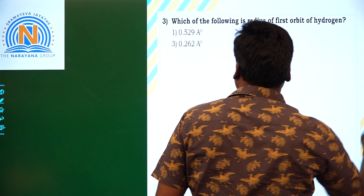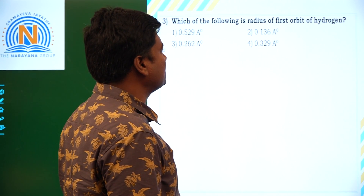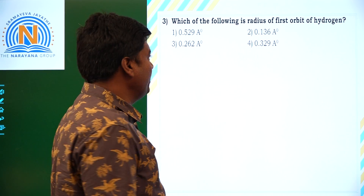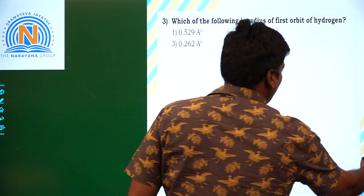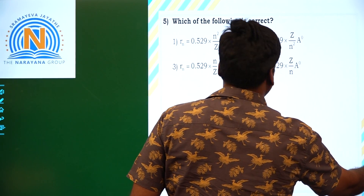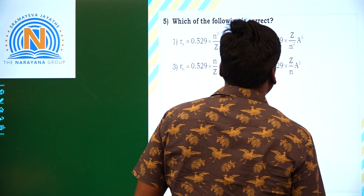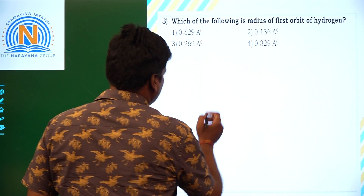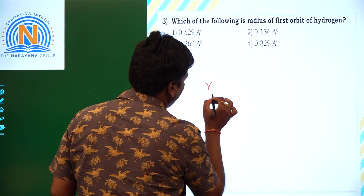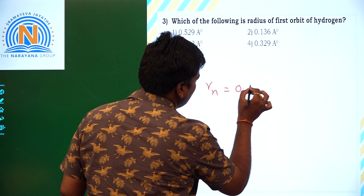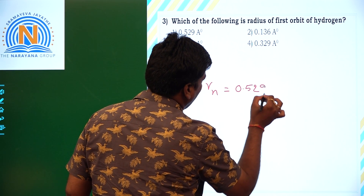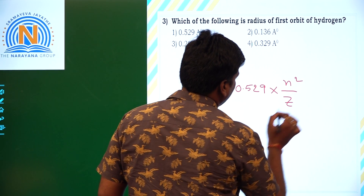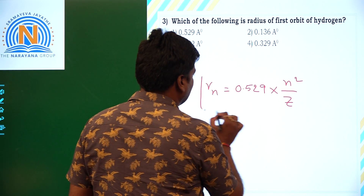Now the next question: which are the formulas for the radius of the first orbit of hydrogen atom? The options are given in angstrom units. For the nth orbit, I can take r_n equal to 0.529 into n square by z, to calculate the radius of the nth orbit.